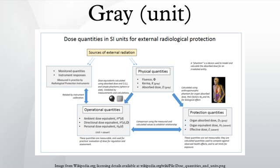The measurement of absorbed dose in tissue is of fundamental importance in radiobiology and radiation therapy, as it is the measure of the amount of energy the incident radiation is imparting to the target tissue. Many different dosimeters are available for these measurements, covering 1D, 2D, and 3D. In radiation therapy, the amount of radiation varies depending on the type and stage of cancer being treated. For curative cases, the typical dose for a solid epithelial tumor ranges from 60 to 80 gray, while lymphomas are treated with 20 to 40 gray. Preventive doses are typically around 45 gray in 1.8–2 gray fractions.